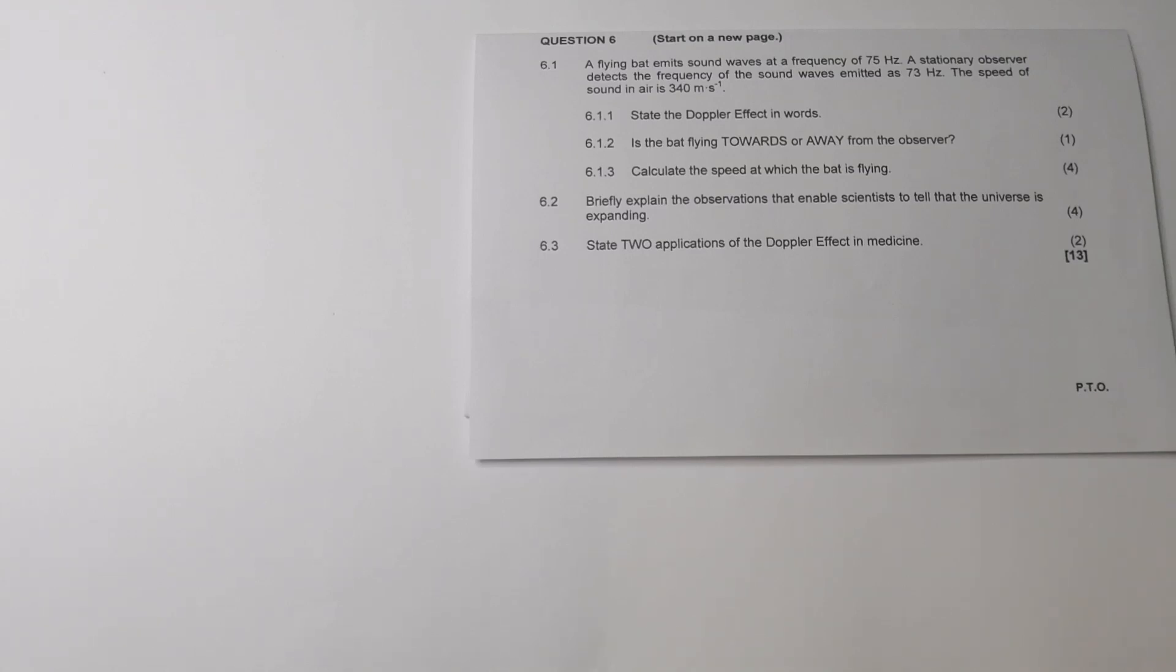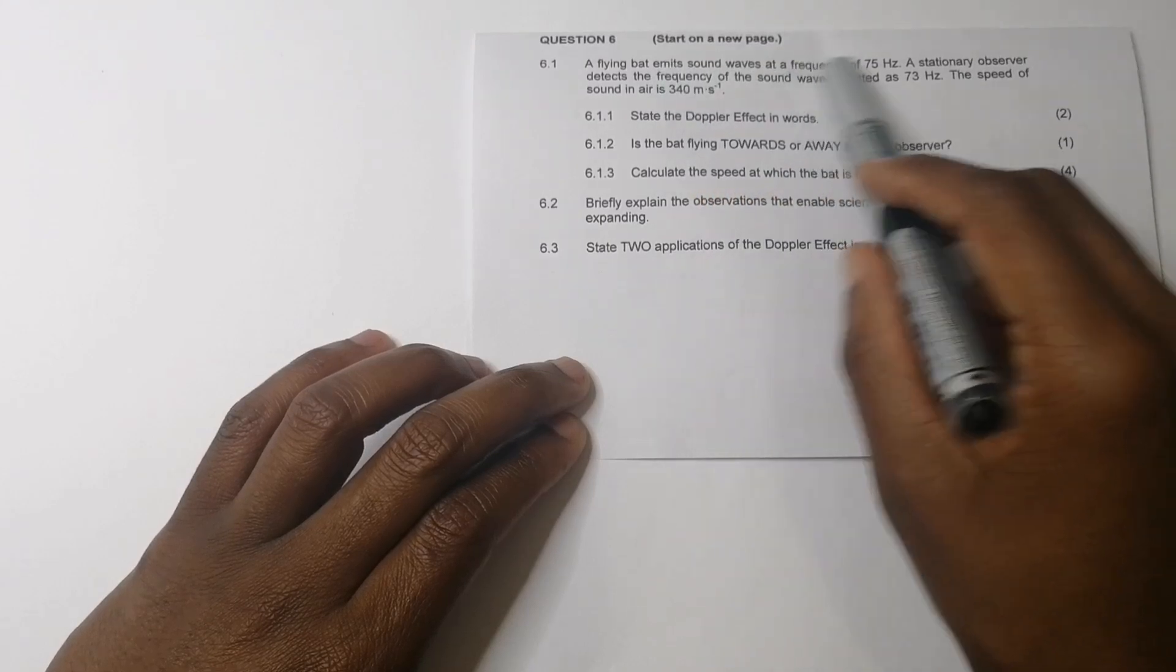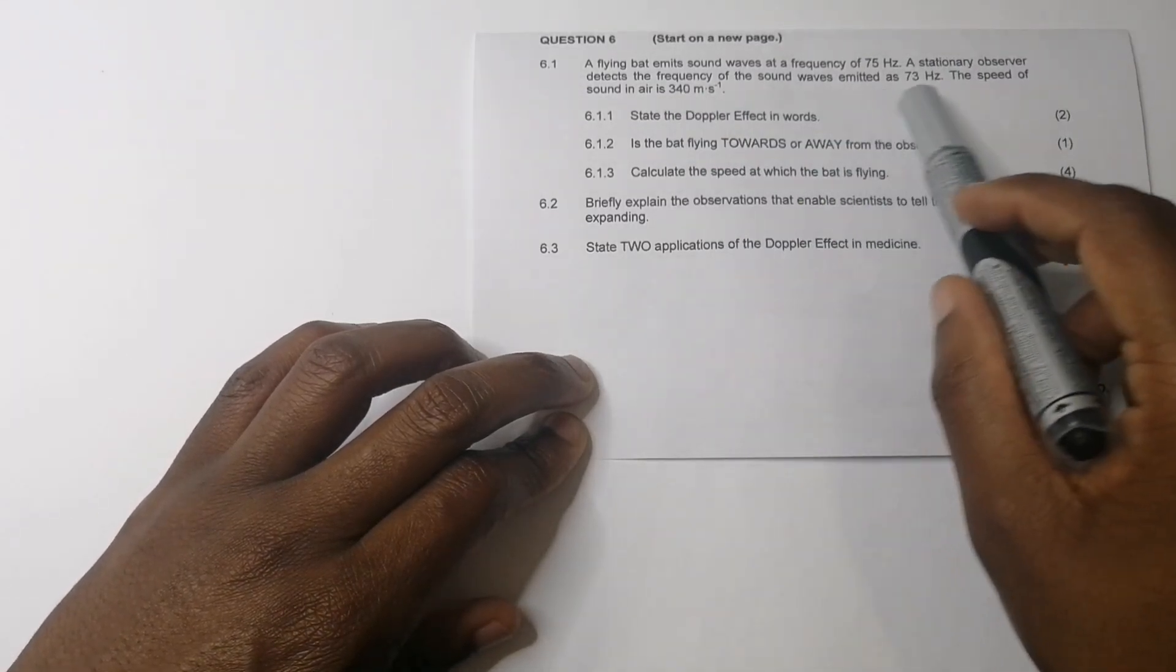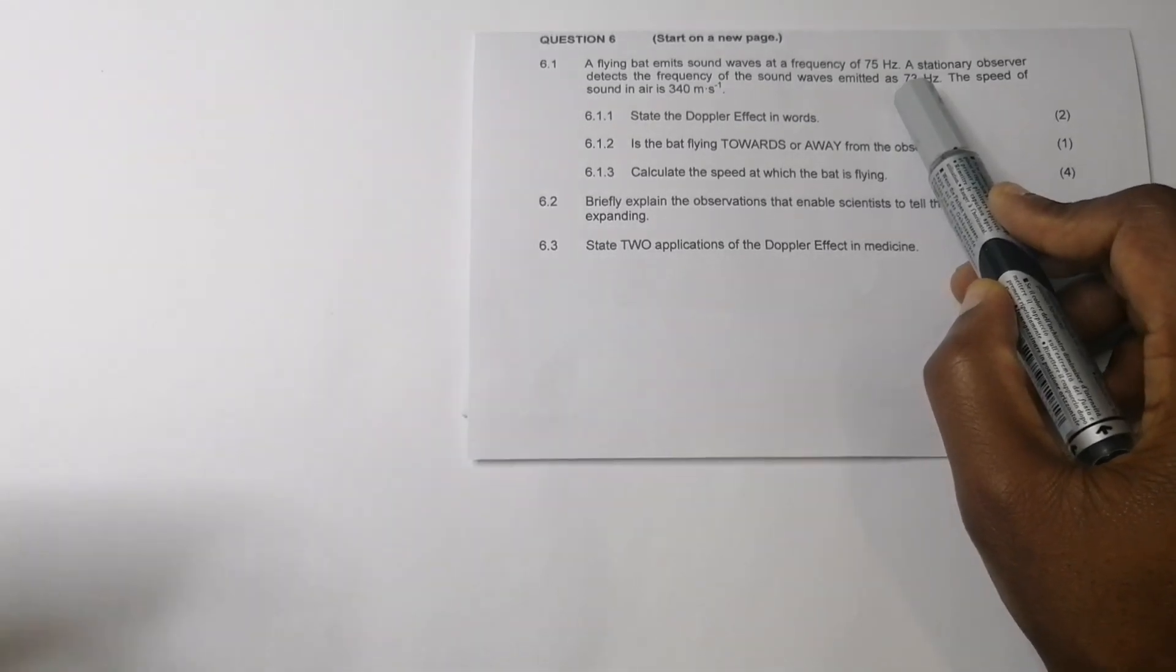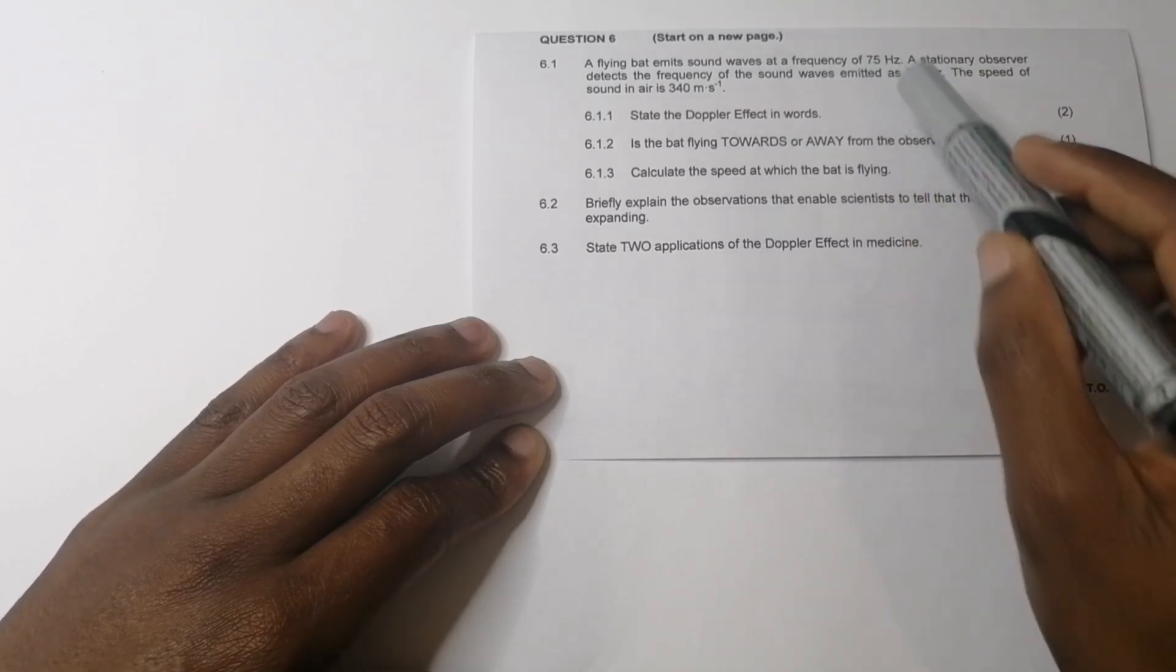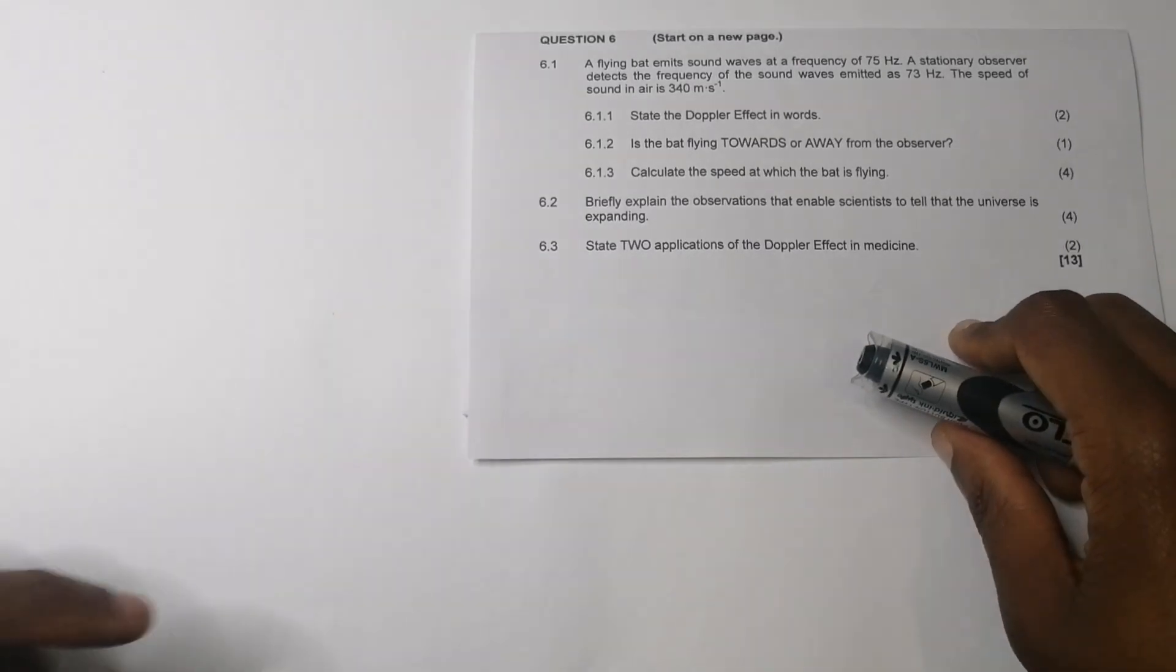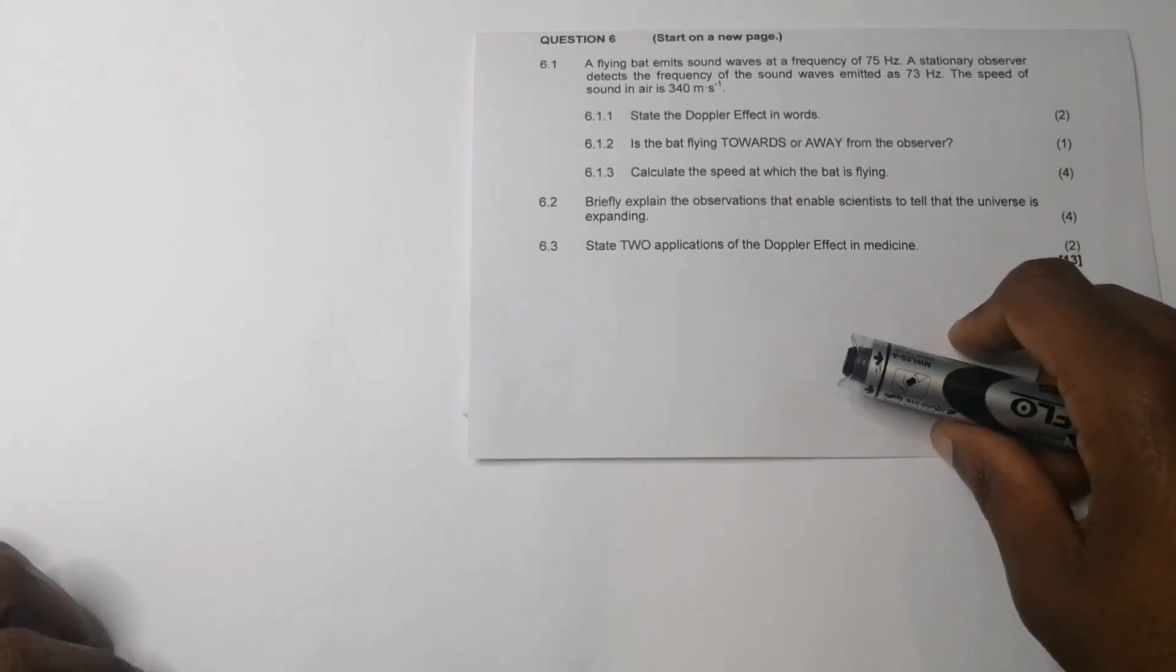Now, let's get to the next question. They say, is the bat flying towards or away from the observer? Now, note, in this particular case, we've got the frequency that's emitted by the bat as 75. So obviously, that's our source. And the stationary observer, however, is detecting a frequency of 73. So remember, we know that when the observed frequency is less than the frequency of the emitter, the emitted frequency. So in this case, it simply tells us that this bat must be moving away. Remember, it's the source that is moving in this case. So it must be moving away from the observer.